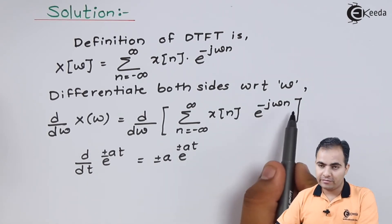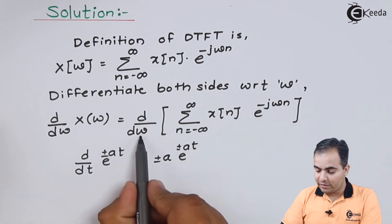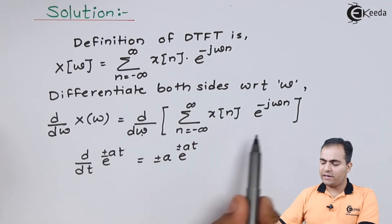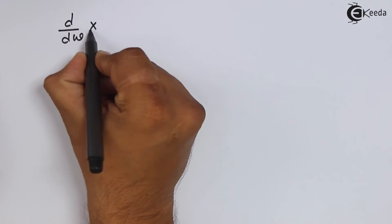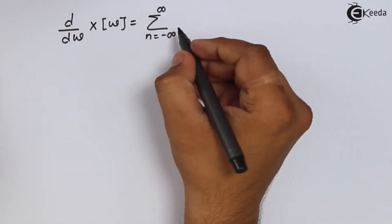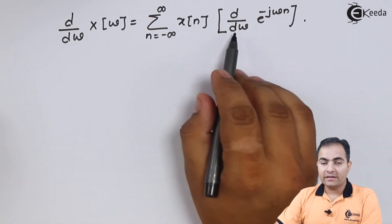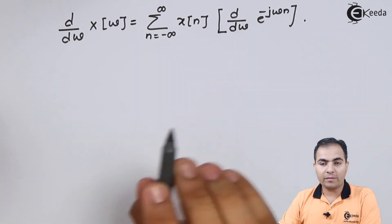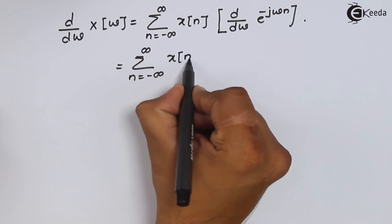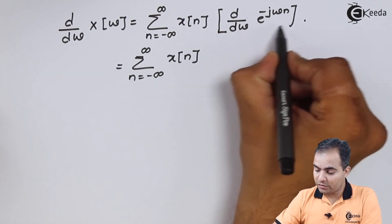Here, the value of a is minus jn, because we are differentiating e to the power minus j omega n with respect to omega, so omega is the variable. Using the differentiation formula, we multiply the exponential by minus jn. Since only the exponential term contains omega on the right-hand side, after differentiation the result includes a factor of minus jn multiplied by the exponential.